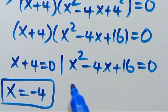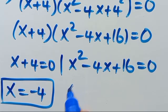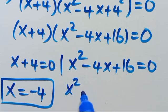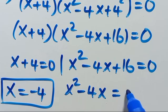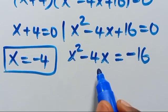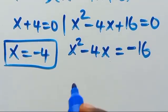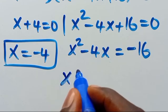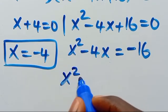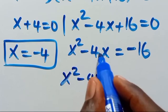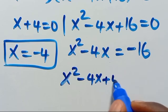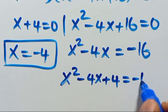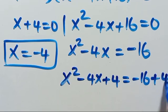From here we have x equals negative 4 as one solution. For x squared minus 4x plus 16 equals 0, we rearrange to x squared minus 4x equals negative 16. To make this a perfect square, we take half the coefficient of x, which is 2, square it to get 4, and add it to both sides: x squared minus 4x plus 4 equals negative 16 plus 4.